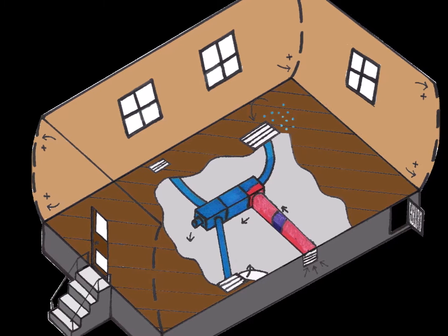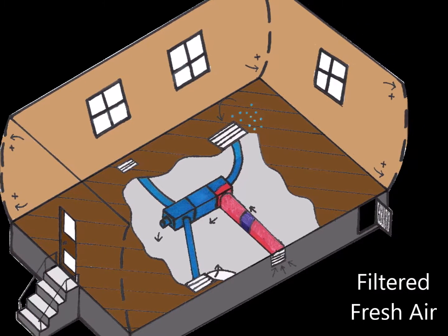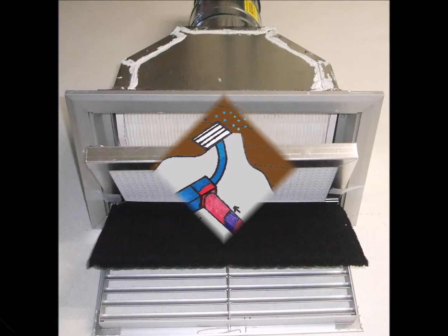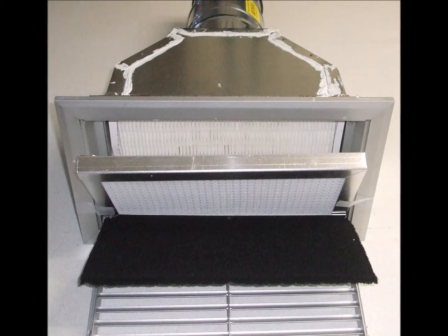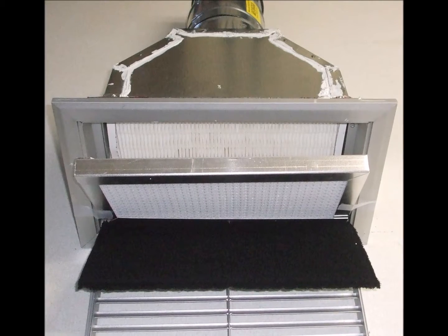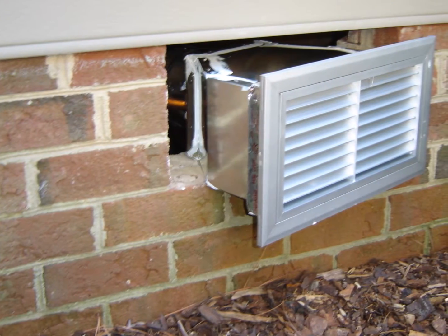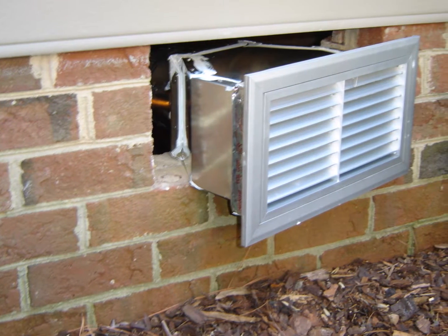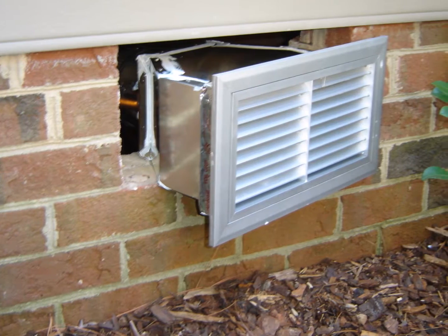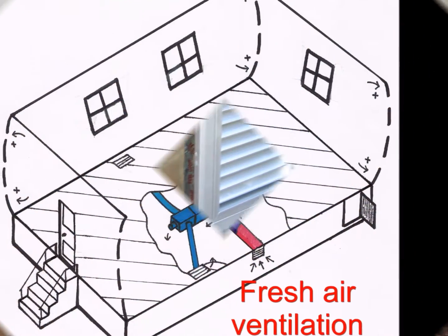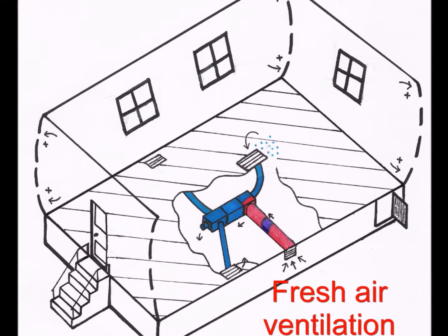Now if you have a crawl space, it's easy to supply your home with filtered fresh air. Simply install a filtered fresh air intake in a foundation vent and connect the air duct to the furnace. Now when your home is heating or cooling, it will pull in a small amount of filtered fresh air, which greatly improves indoor air quality by capturing pollutants before they get into your home.